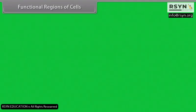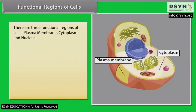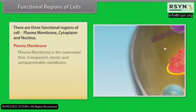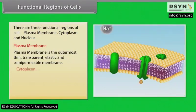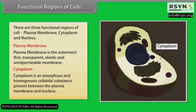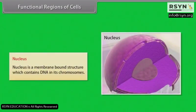There are three functional regions of a cell: plasma membrane, cytoplasm and nucleus. The plasma membrane is the outermost thin, transparent, elastic and semi-permeable membrane. Cytoplasm is an amorphous and homogeneous colloidal substance present between the plasma membrane and nucleus. The nucleus is a membrane-bound structure which contains DNA in its chromosomes.